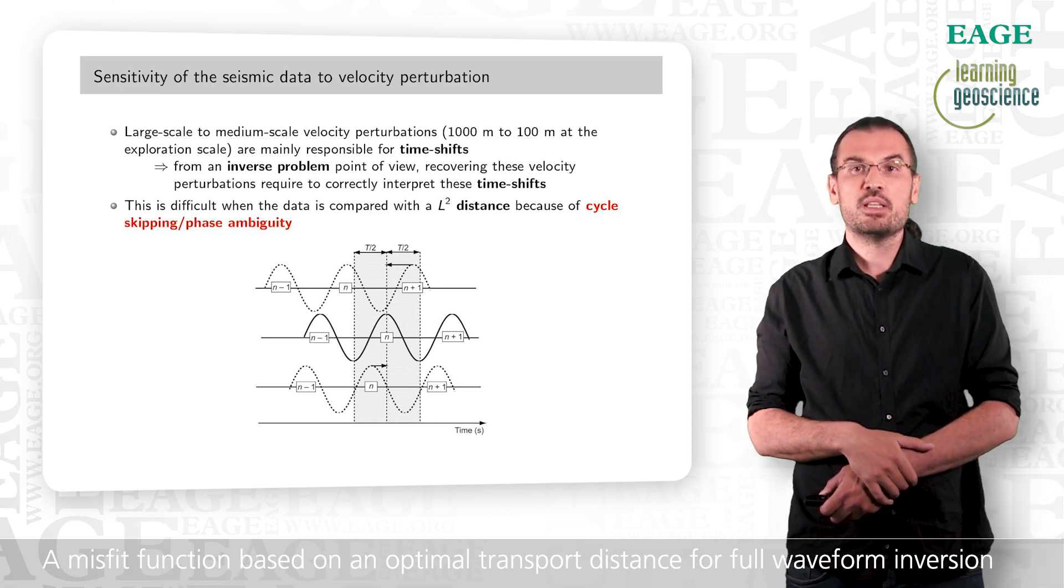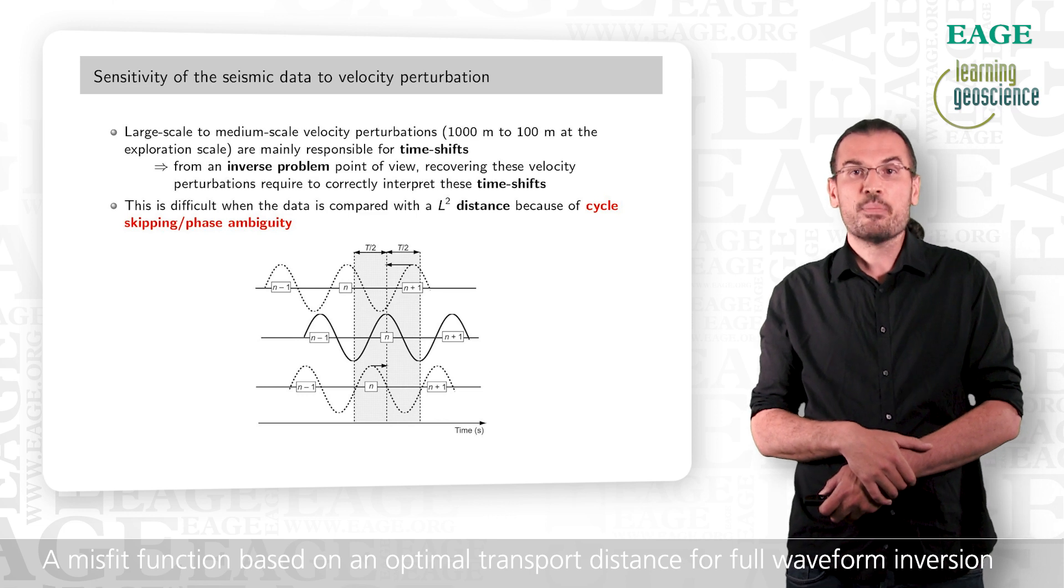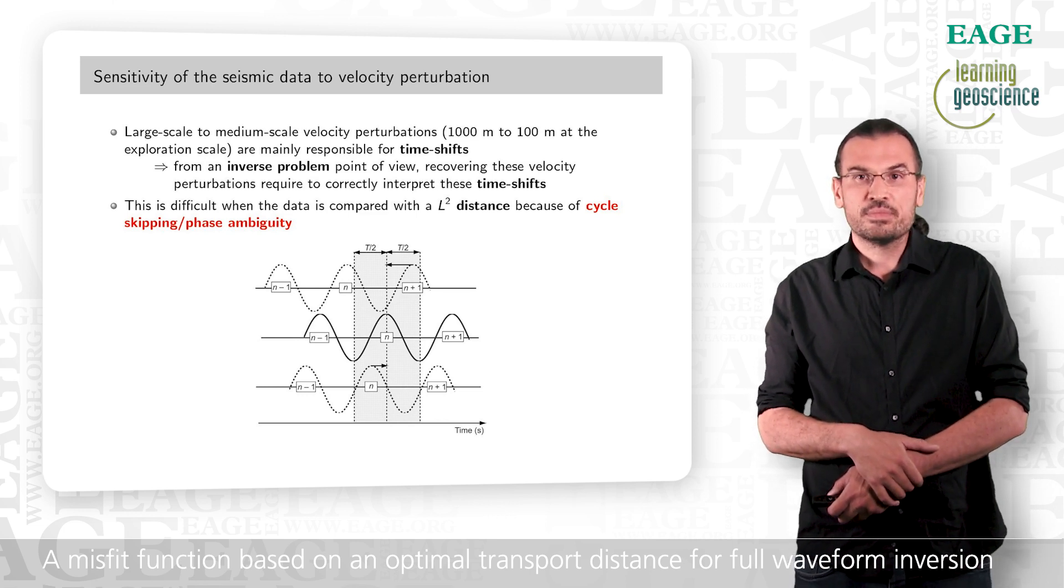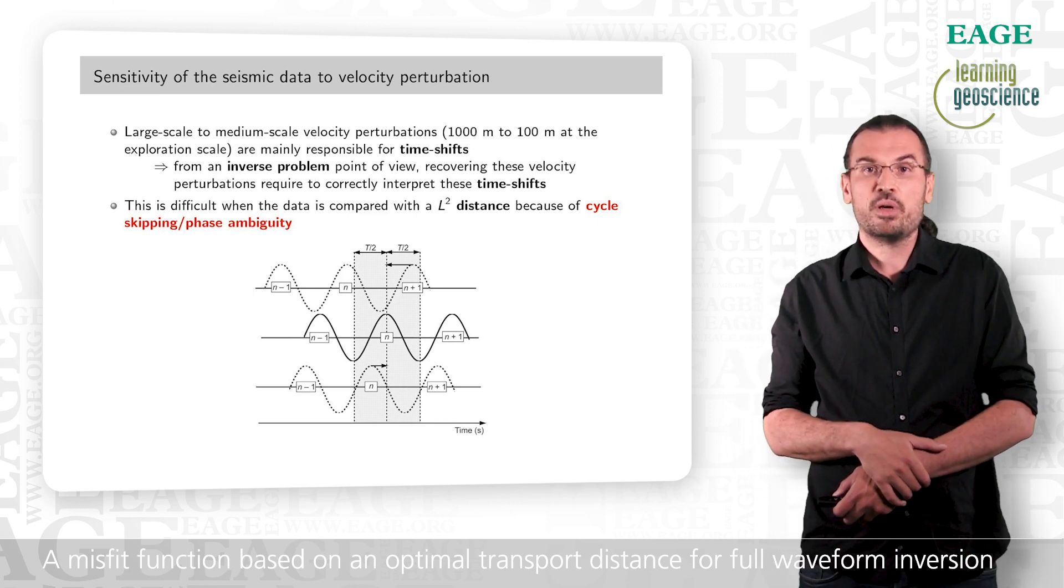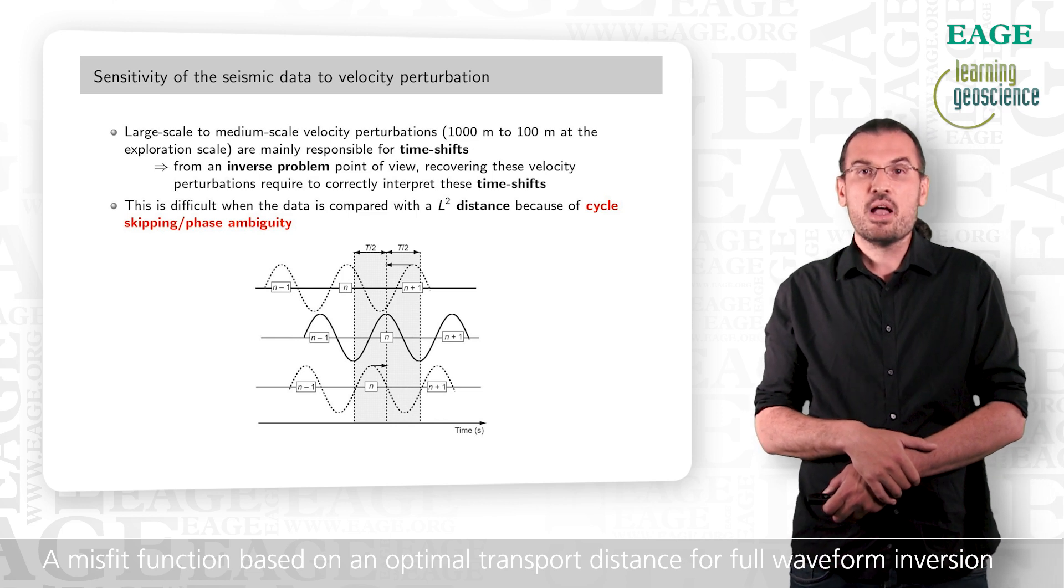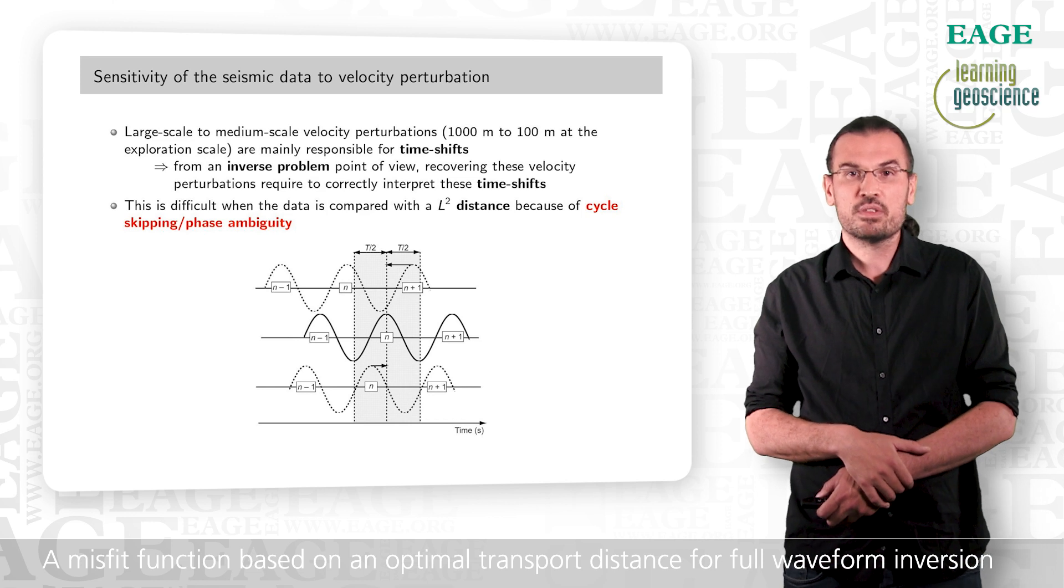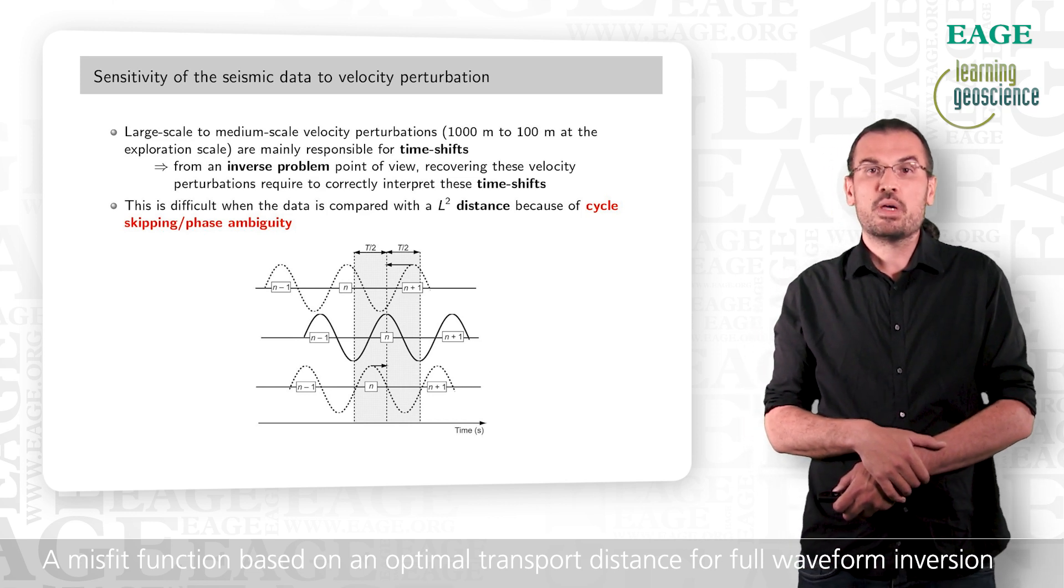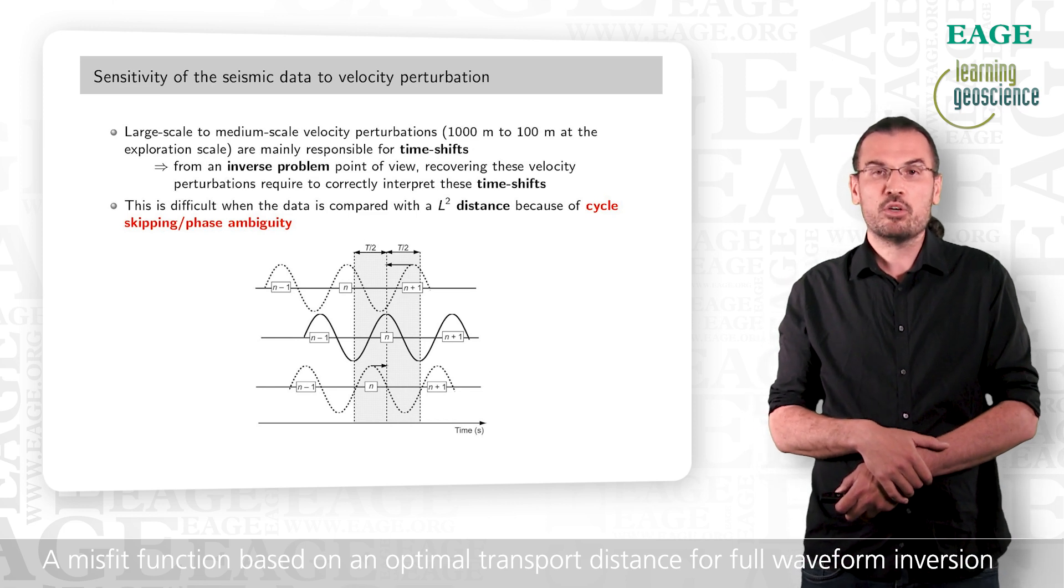This is complicating using a least square misfit. This is represented here on this figure, where we schematically represent the data as a signal. If the predicted data is shifted from the observed data by more than half a period, then minimizing the misfit in the least square sense amounts to fit the observed data with one to several phase shifts. This is what is referred to as the cycle skipping or phase ambiguity issue in the FWI community.